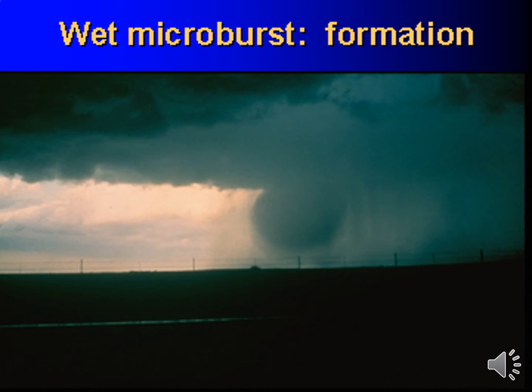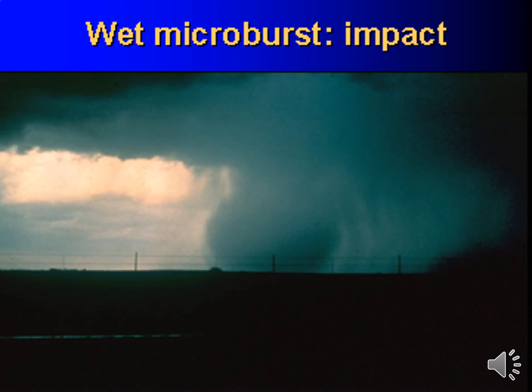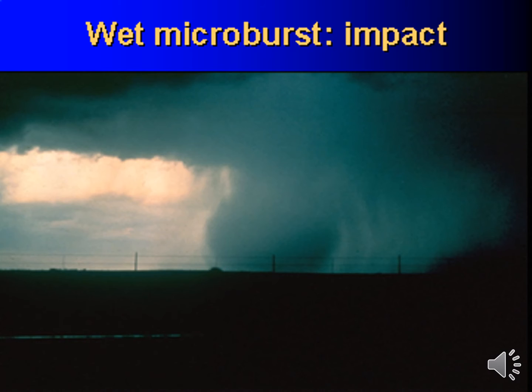In this example, we can see the rain-cooled air emerging from the base of the storm. This is the point at which the strong winds push outward and away from the point of impact. Note the lead edge of the winds, or gust front, as it pushes away from the point of impact — the strongest wind shears are located along this lead edge.